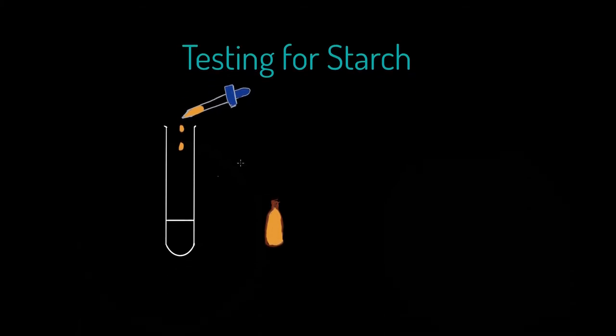Let's have a look at a test for starch. We have here some iodine solution. Iodine solution is the reagent we are going to use to test for the presence of starch. How are we going to go about this? We're going to take our food solution and get two centimeters cubed of that food solution and put it in a test tube. That is going to be consistent for all of our tests.